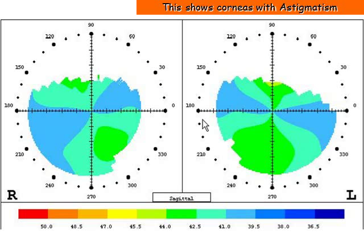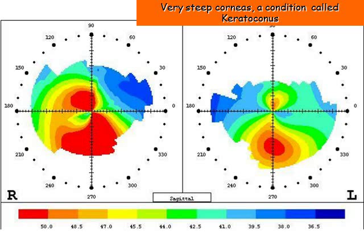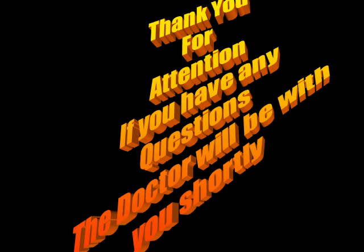Next we see, in this graph, the hourglass shapes in the topography images, which indicate astigmatism. The red in this graph indicates very steep corneas, which denotes a condition called keratoconus. The red in this graph is a natural size; the red in this graph is concentrated.